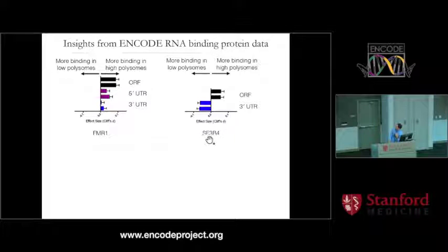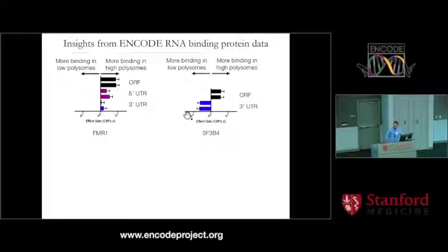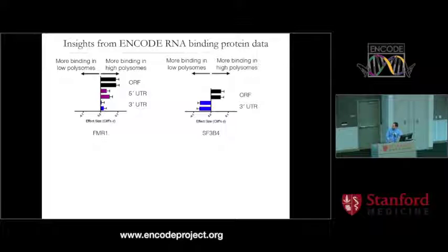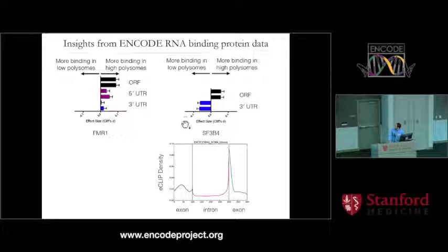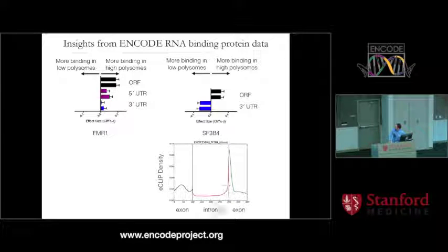The second example is the splicing factor SF3B4: more binding sites in an open reading frame are associated with better translation, while more binding sites in the three-prime UTR are associated with worse translation or ribosome occupancy. One possibility is that exons inside an open reading frame are known to promote translation through nuclear export and actively recruiting translation factors, whereas exons in three-prime UTRs downstream of the stop codon would activate nonsense-mediated decay. I'm very excited by the possibility of using ENCODE RNA binding protein data to add another layer of interpretation on top of transcript-specific translation. The metagene plot of SF3B4 does look like a splicing factor — it binds mostly at intron-exon junctions, so I don't think it's binding to mature transcripts.